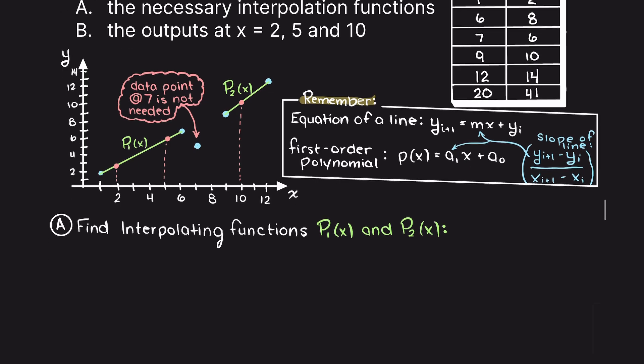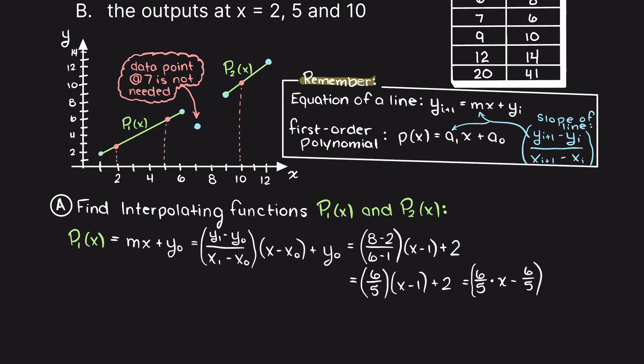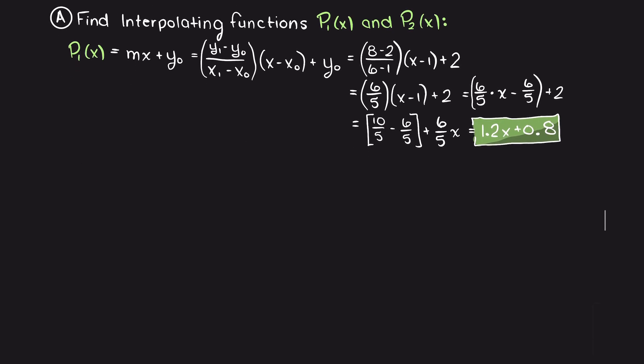To do so, we just need to apply the correct data points as our parameters for the general equation of a straight line and simplify. This results in p1 being 1.2x plus 0.8, with a domain of this function being the following.